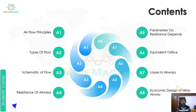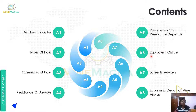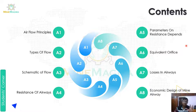Is topic mein hum kya kya cheezein cover karne waale hain: pehle hum airflow ke principles dekhenge, phir type of flow dekhenge, phir schematic of flow aur resistance of airways, phir consequences — kaun se parameters hamare airways ke resistance pe depend karte hain, equivalent orifice kya hota hai, uske advantages aur results, aur airways mein losses kaisa hota hai, aur economic airway kya hota hai.